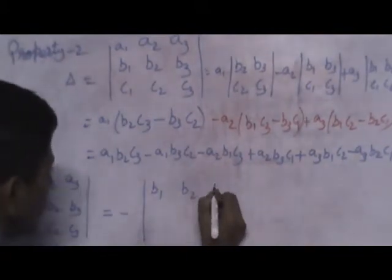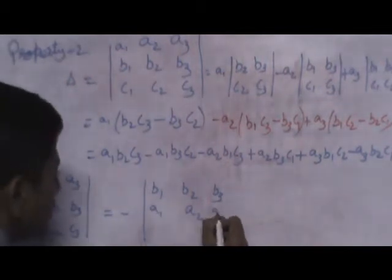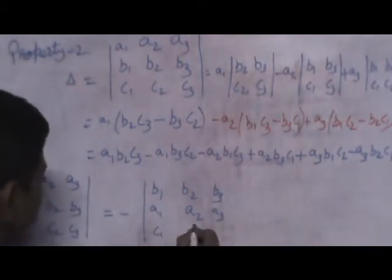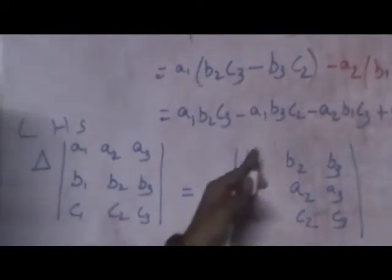B1 B2 B3, A1 A2 A3, C1 C2 C3. We know the value of this left-hand side and we want to show that it is equal to minus of this one, minus of the interchanged part.